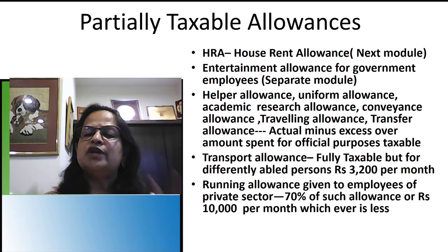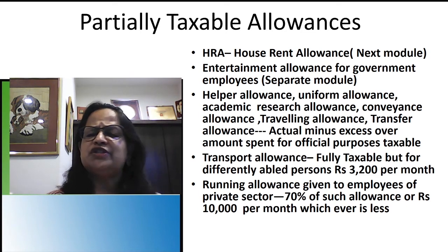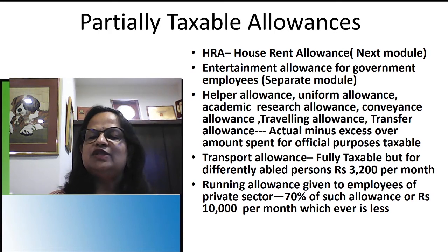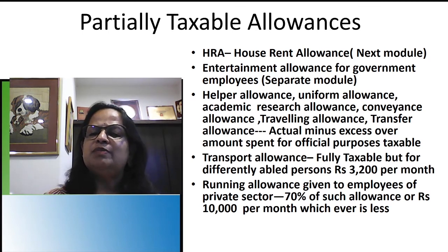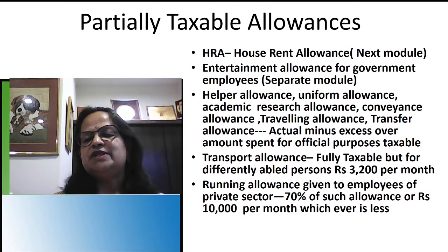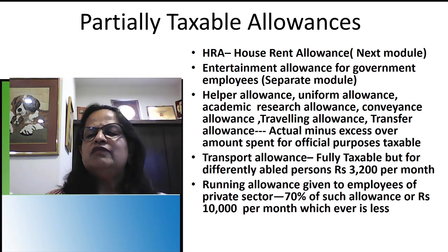Running allowance is important for a two-mark question. It is given to private sector employees — especially those in marketing jobs — who travel throughout the district, state, or country. The exemption is: 70% of the allowance received or Rs. 10,000 per month, whichever is less. For example, if they get 10,000, then 70% is 7,000, which is exempted. If they get 14,000, compute 70% of 14,000 and compare with 10,000; whichever is less is the exemption.